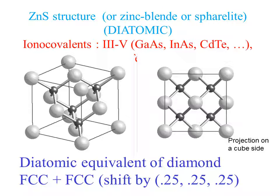The diatomic equivalent of the diamond structure is obtained by taking the shifted sub-lattice with a different type of atom. This is also a very important structure because it is found in the II-VI and III-V semiconductor systems, like the examples given here.